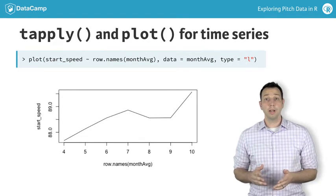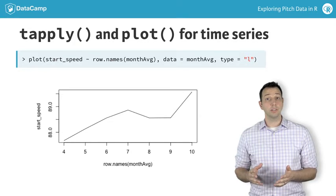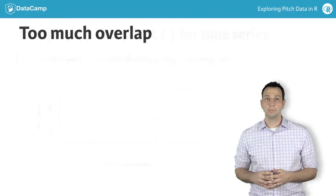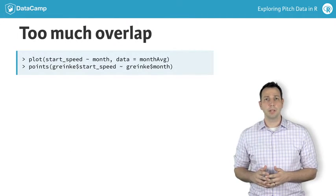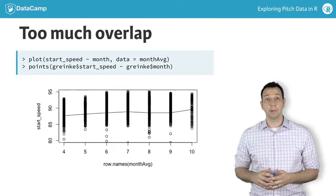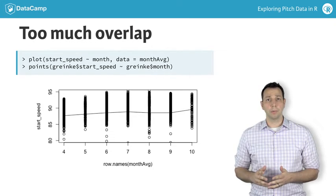Therefore, you'll also add individual points representing the velocity of each pitch to evaluate the variability in velocity for each game. Since there are about 100 pitches for each game, and velocity is measured at one-tenth of a mile per hour, many points will be overlapping in the plot. This can make it difficult to see all of the pitches, as you can see here.